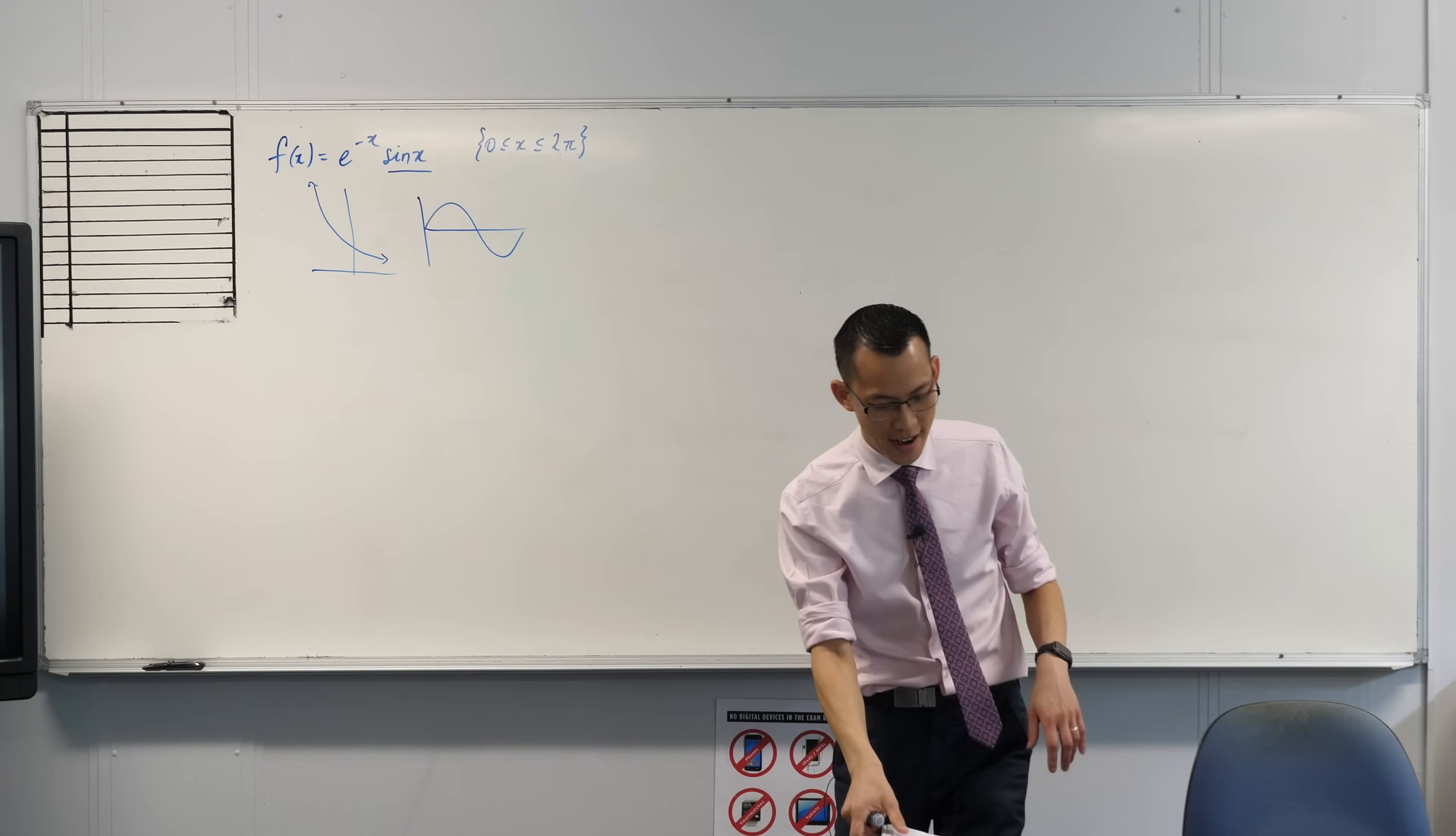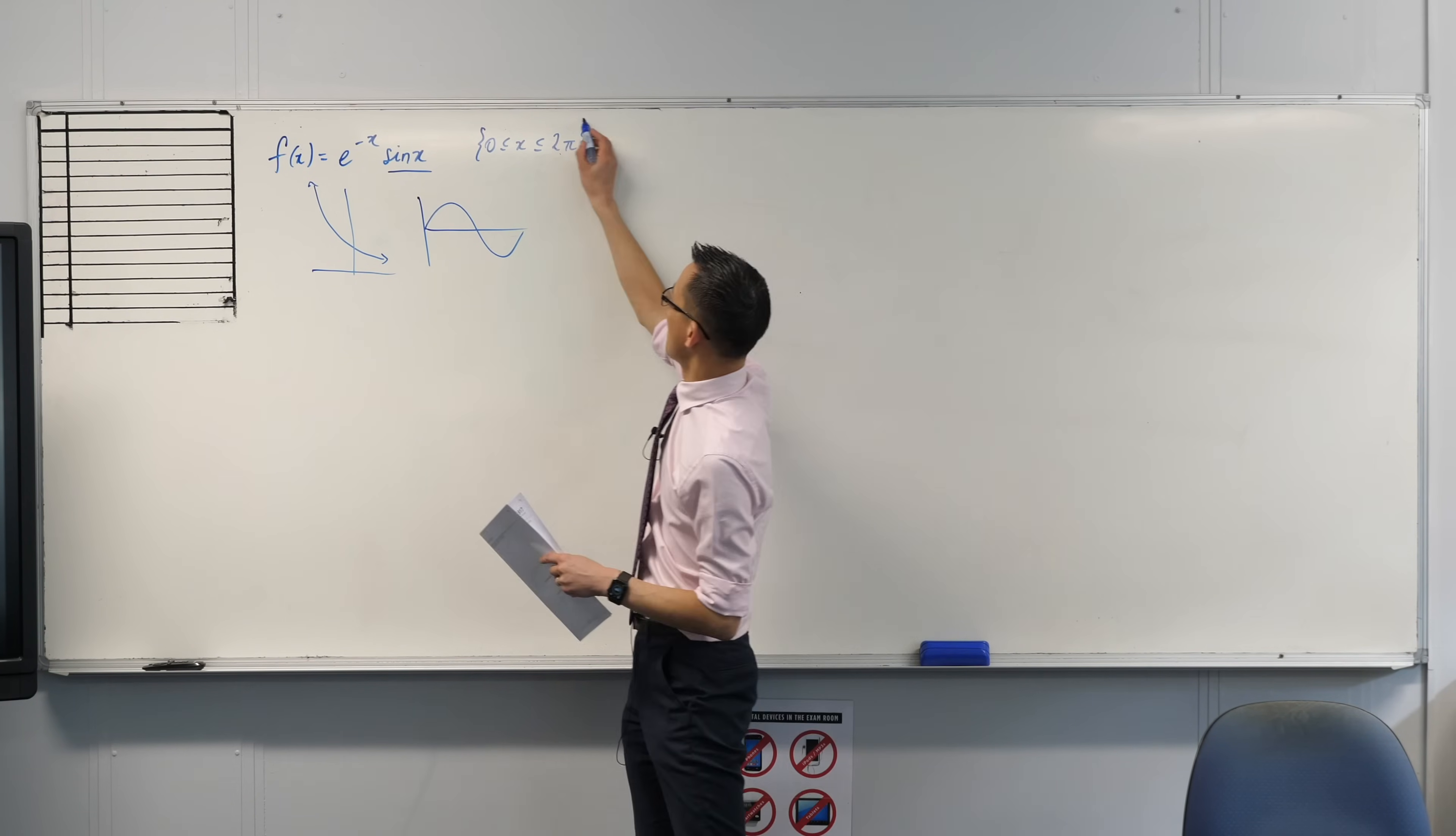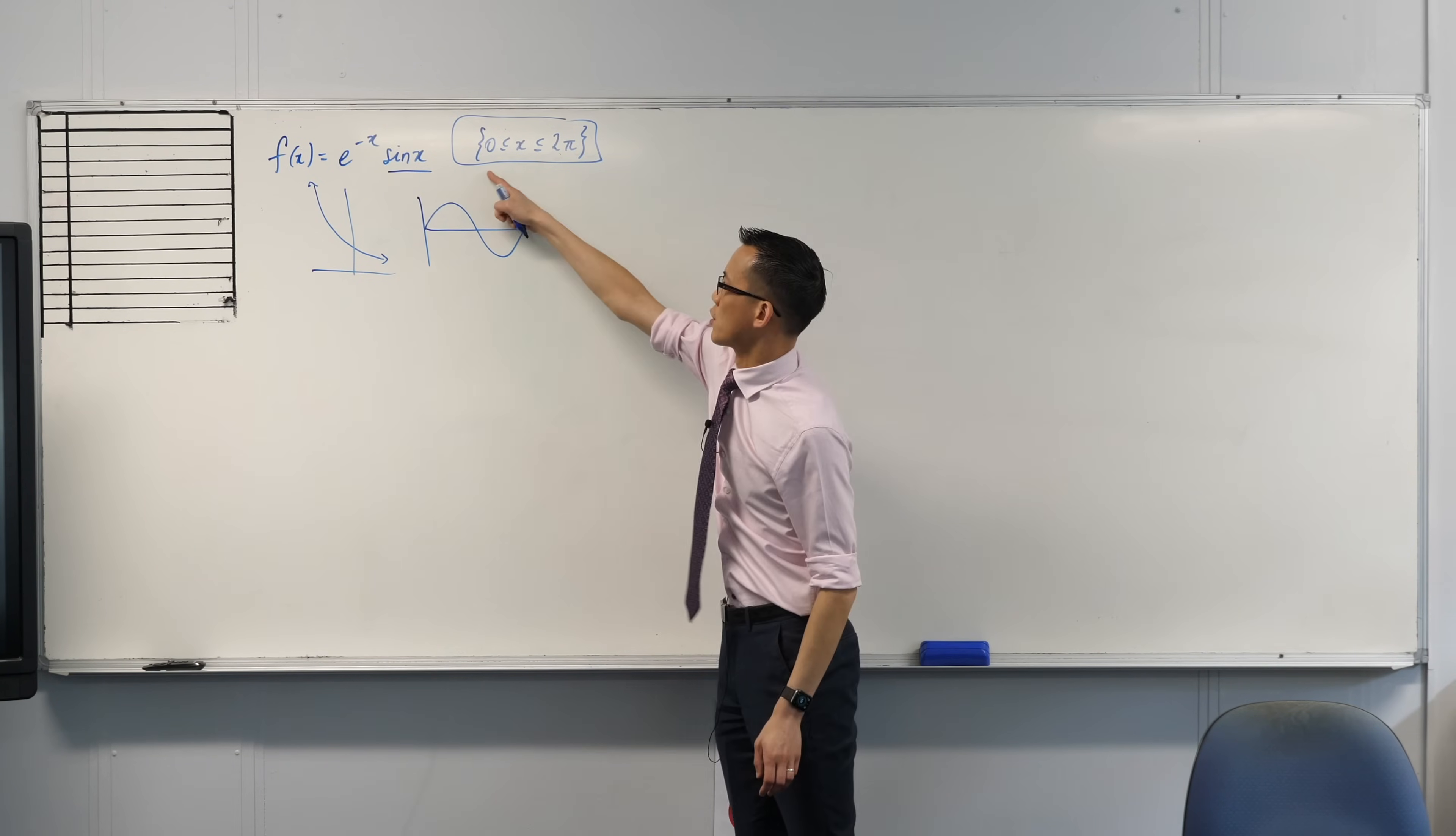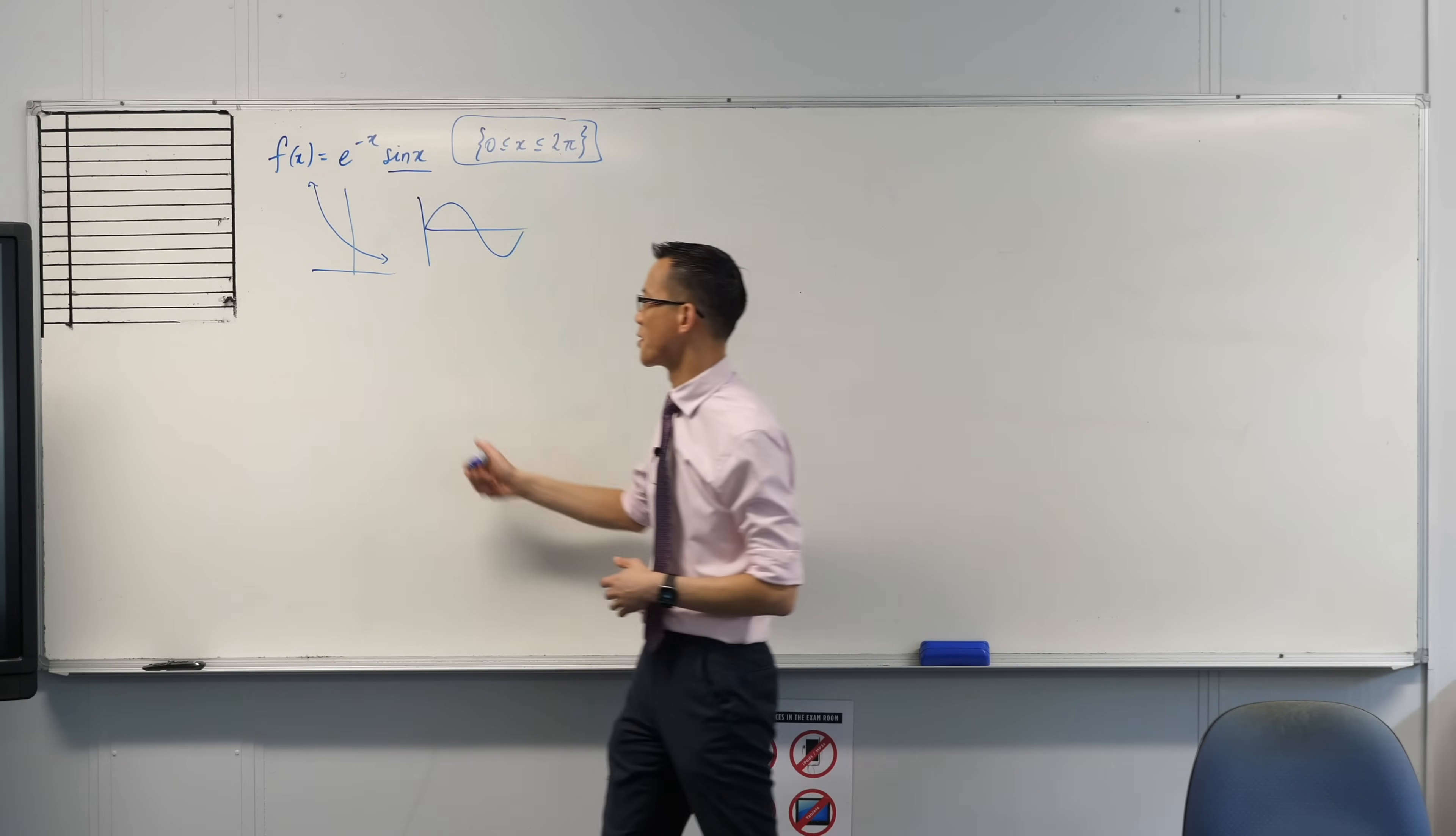So what we're being asked to do is mush those two things together, and they ask us to find the coordinates of stationary points. This means don't find all the stationary points, just find it in this little zone here, and they've just named where that zone is.